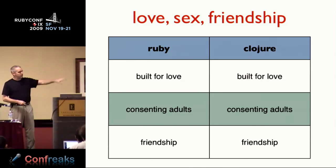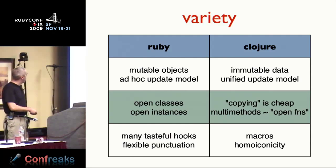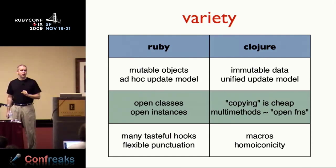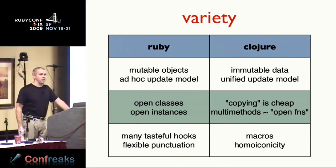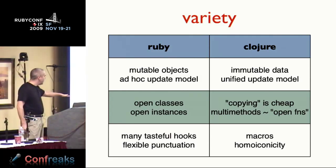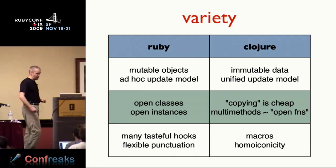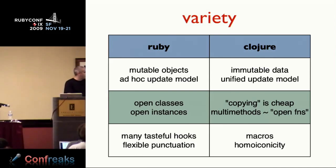Love and sex and friendship are all better with variety. Ruby lets you paint yourself out of any corner — with tasteful hooks and flexible punctuation important for writing DSLs. Lisp has a different approach: instead of flexible punctuation, really rigid but almost non-existent syntax, which allows really easy metaprogramming with macros. I'm not going to put a stake in the ground that one is better. Ruby is all about open classes and open instances; Clojure is not — we don't really think about classes or instances, just data, and multi-methods give us open functions that are actually more open than classes or instances.